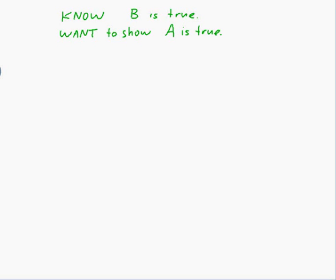So what we do in a proof by contradiction is we assume a is false. So we assume the opposite of what we want to show. I think that's how it works.